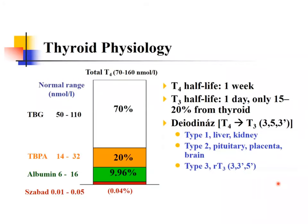The half-life of T4 is about one week. This means if a patient has hyperthyroidism with elevated T4, treatment will not show an effect immediately — you must wait one to two weeks before seeing clinical improvement. The T3 half-life is much shorter, about one day, so T3 levels decrease faster. However, because T4 is the major precursor of T3, clinical symptoms disappear gradually and slowly.